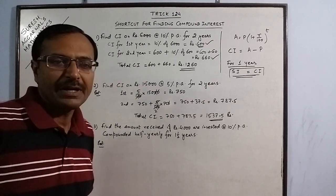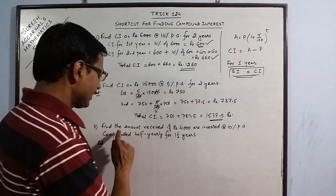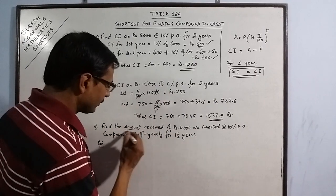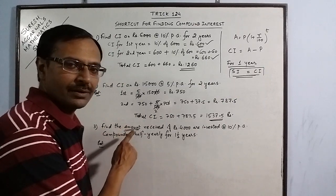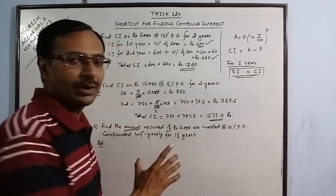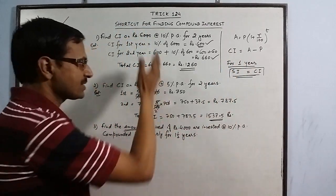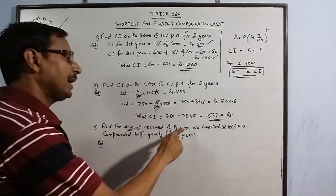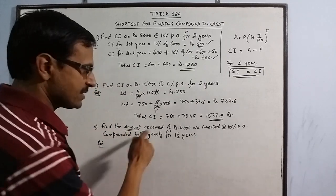Let us take a little bit different problem. Here the amount received, we have to calculate the amount. Amount cannot be calculated if we do not know the compound interest. We need to know the compound interest first and then add it to the principal amount. We get the amount received.